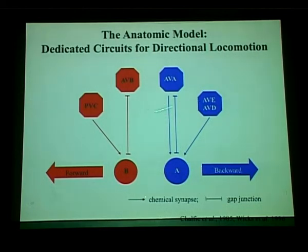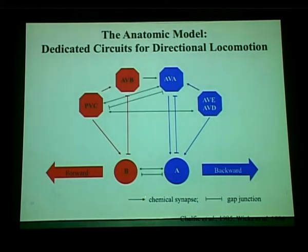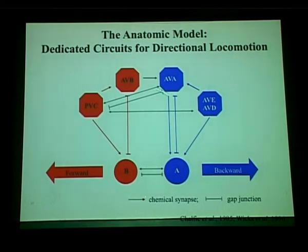Ablation of combinations of the AVA, AVD, and AVE blue pre-motor interneurons makes the animal unable to generate backward movement while forward locomotion remains relatively intact. These are the pre-motor interneurons that generate chemical synaptic input as well as gap junction coupling to the A-class motor neurons. So the predominant hypothesis is that there are two separate motor circuits driving forward and backward locomotion. I want to draw attention to the AVA interneuron, which has mixed chemical and gap junction inputs to the A-class motor neurons.